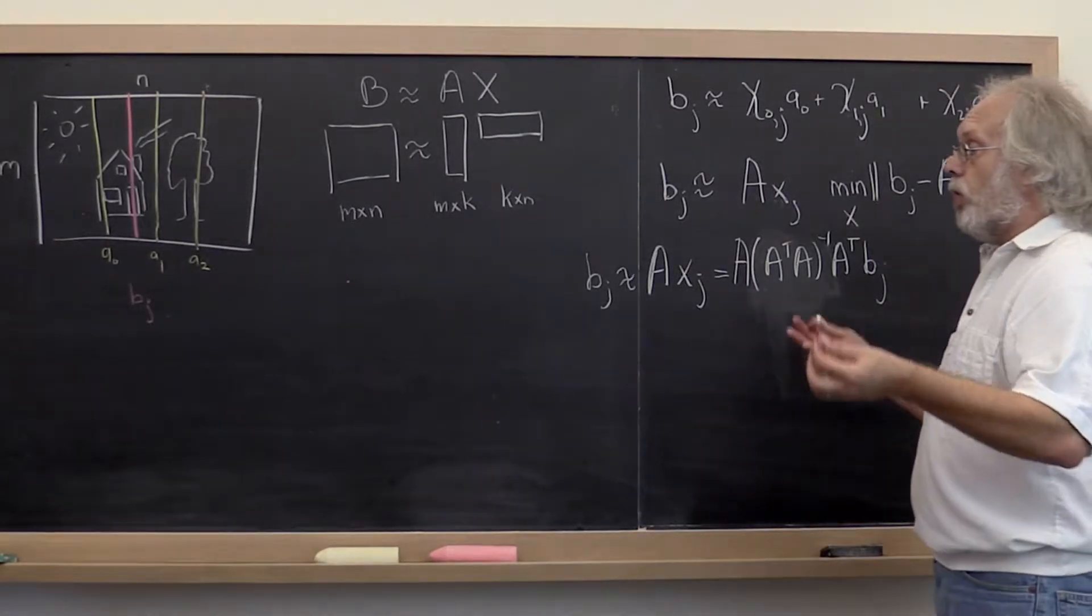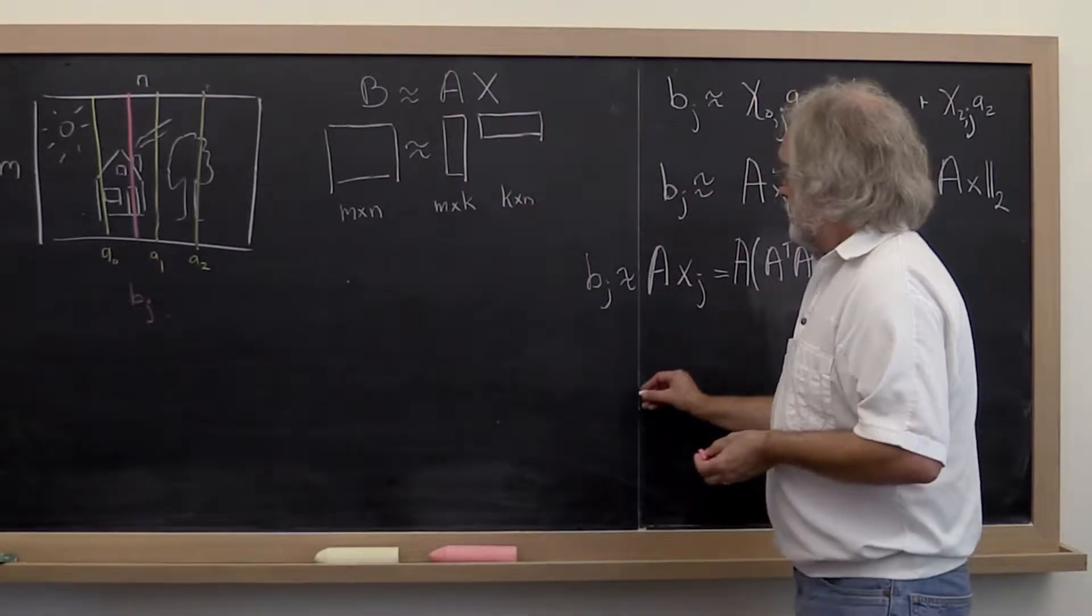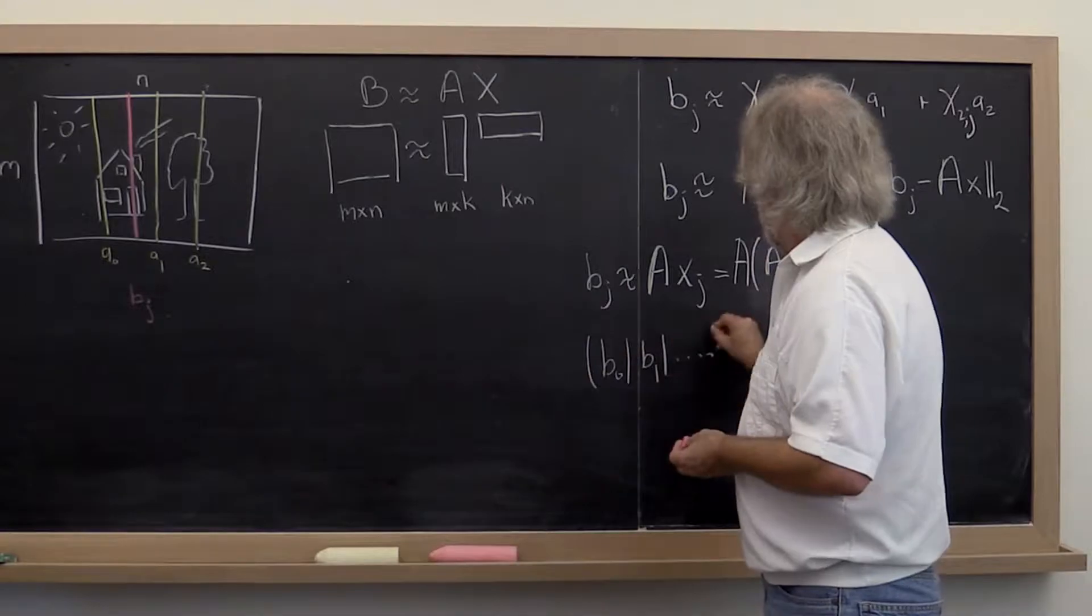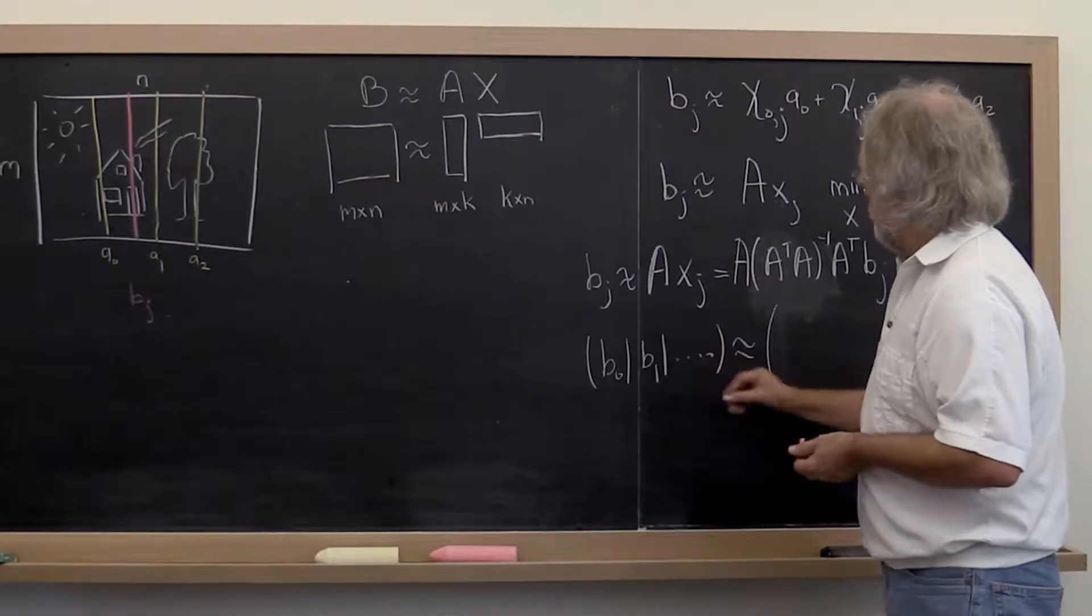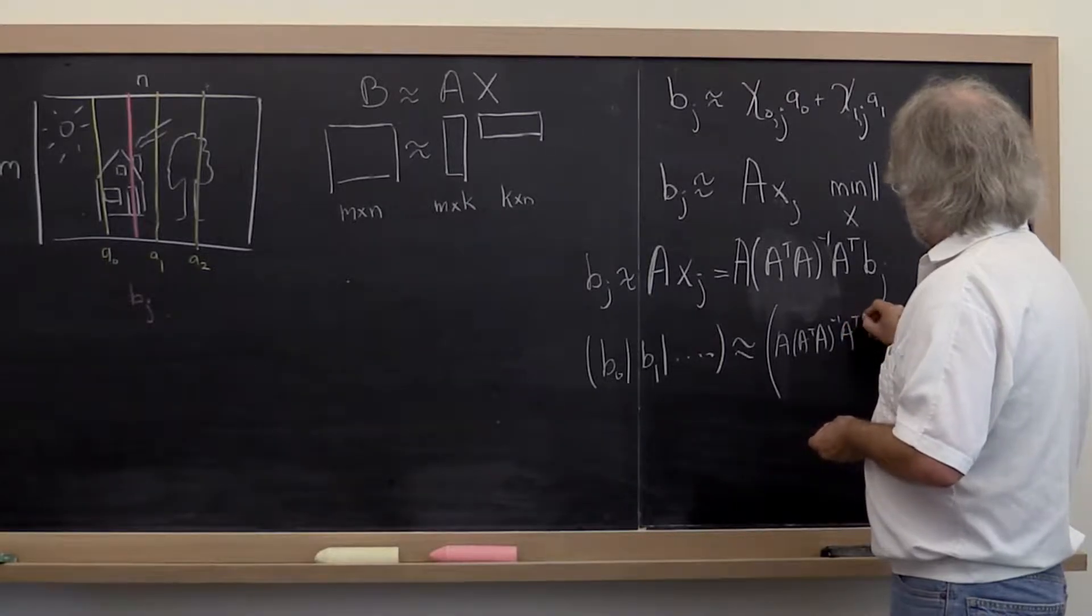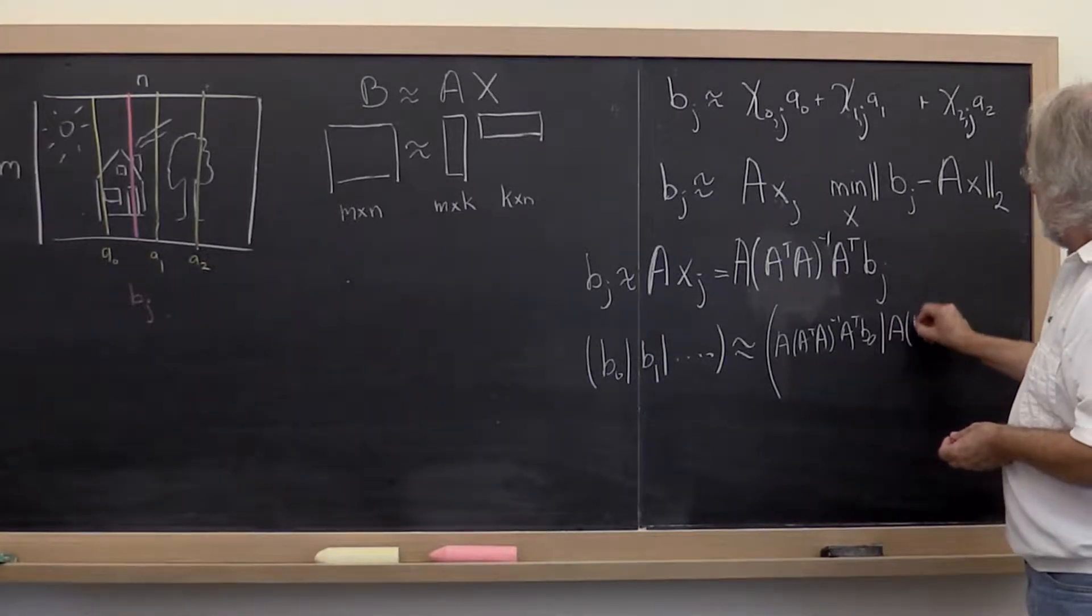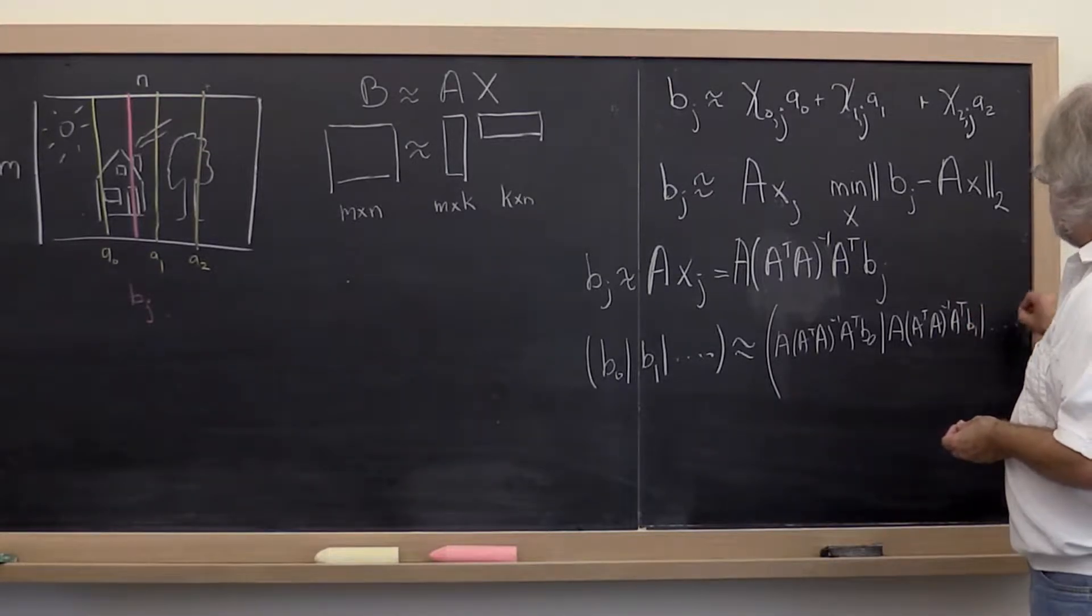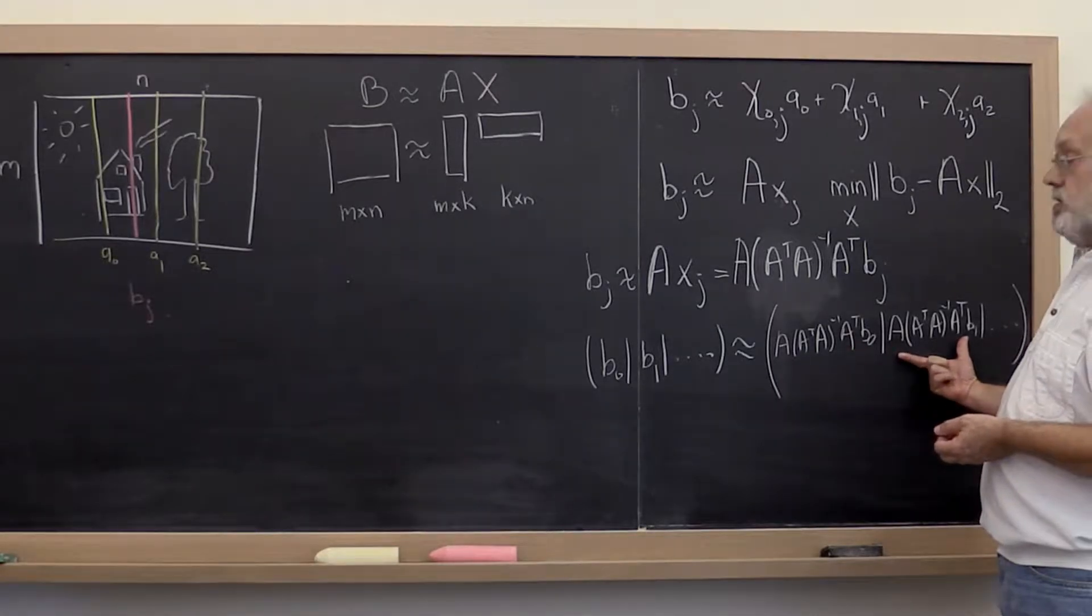Now what if we do that for all of our columns in our picture? Then we would say B0, B1, and so forth is approximately equal to, the first column would be approximated by A times A transpose A inverse A transpose B0. The second column would be approximated by A times A transpose A inverse A transpose B1, and so forth. And you should recognize the fact that we can then bring this matrix out.